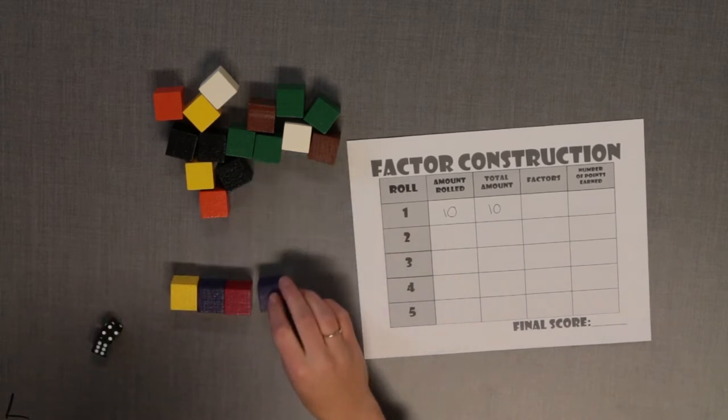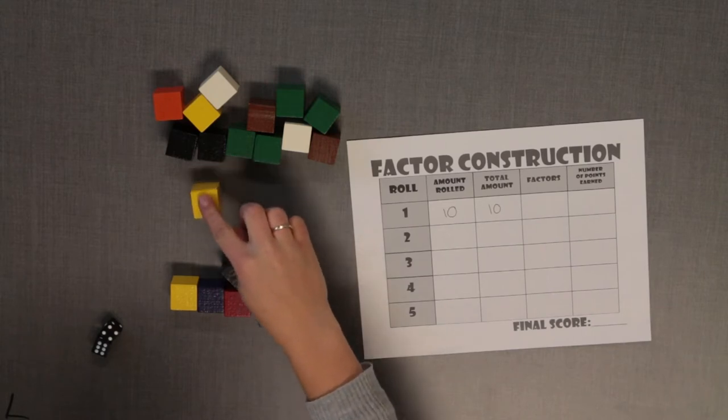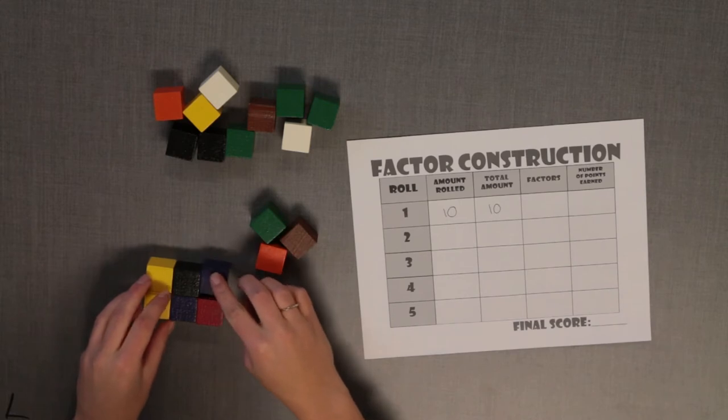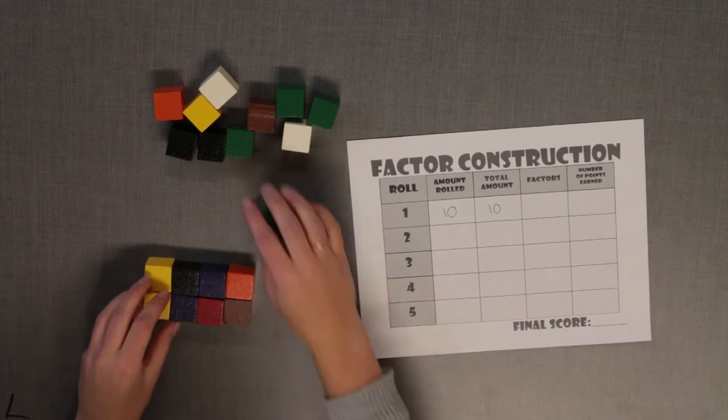The player has rolled a sum of ten. Use ten cubes to create a rectangular prism. How many different ways can you arrange them and still have a rectangular prism? What are the side lengths of each prism?